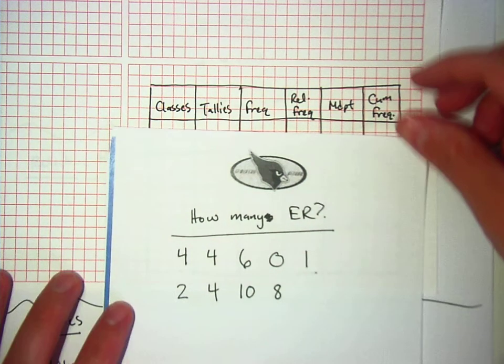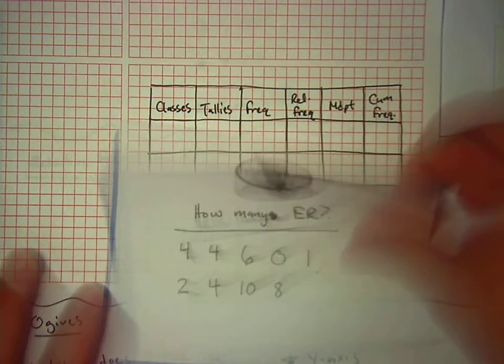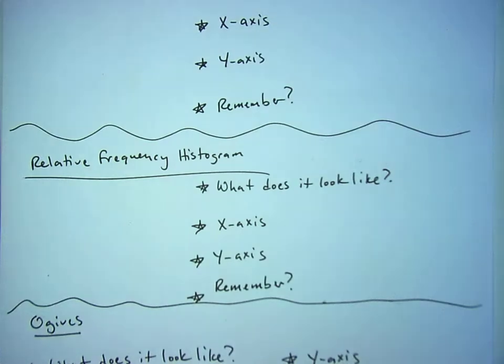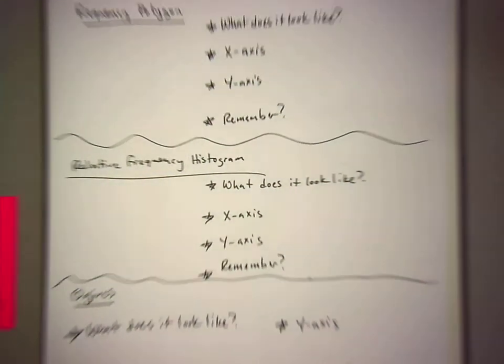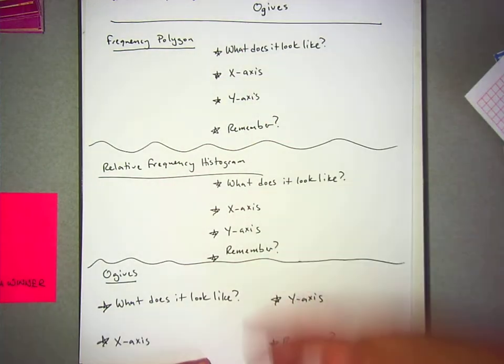All right, people at home, here's what we've been doing so far. I've got a paper set up that looks like this. Today we're learning about frequency polygons, relative frequency histograms, and ogives. This will probably take us two days.